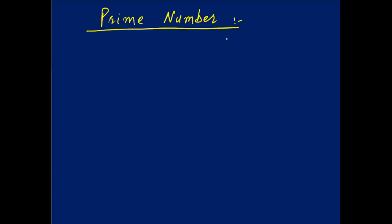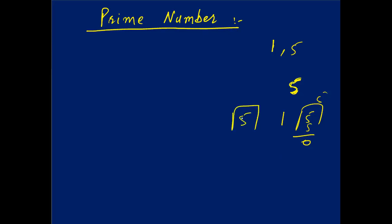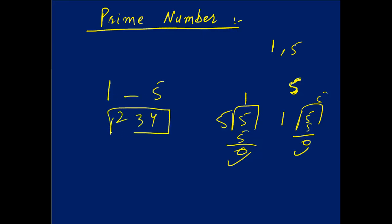Welcome back. In this tutorial, I am going to find out whether a number is prime or not. I will make a flowchart for this. A prime number is the number which is divisible by 1 and that number itself. Suppose we have 5 — it is only divisible by 1 and 5 itself, so the remainder is 0 in both cases. The numbers between 1 and 5 — 2, 3, 4 — cannot divide 5. So yes, 5 is a prime number because it is not divisible by 2, 3, or 4.